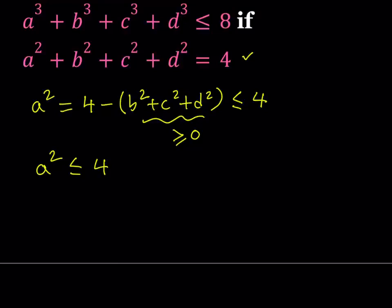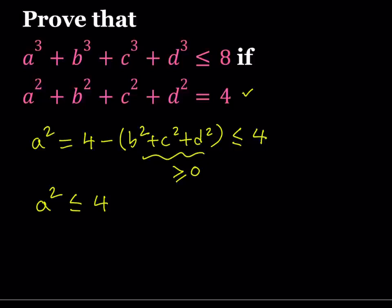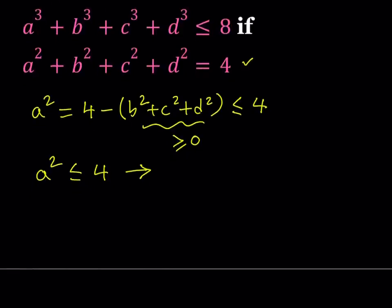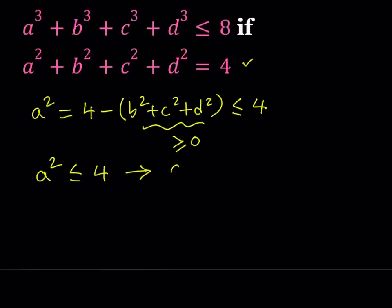We need to use this information, and obviously we need to turn it into a cube, because we are supposed to show that the sum of the cubes is less than or equal to 8. So how do I use that information? Notice that if a squared is less than or equal to 4, then a is going to be less than or equal to 2.